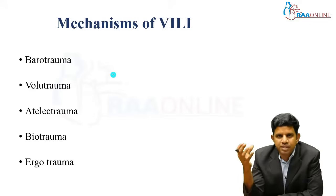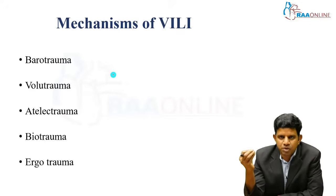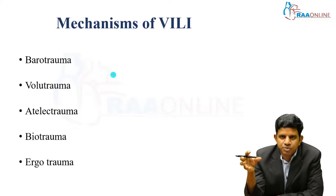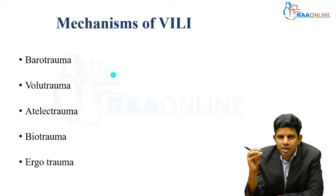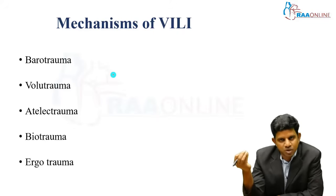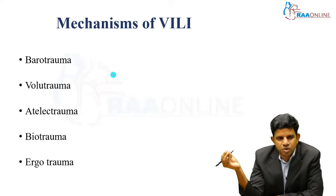What are the mechanisms of ventilator-induced lung injury? First is barotrauma — if we give excessive pressure to the patient's lung, it will cause barotrauma. Second is volutrauma — excessive tidal volume delivered to the lung causes volutrauma. Third is atelectrauma, which means there is alveolar opening and closing during inspiration and expiration. Biotrauma means this repeated opening or collapse will release inflammatory markers, which damage the patient's lung and extra-pulmonary organs.